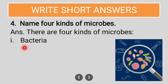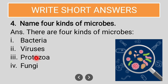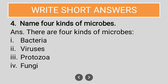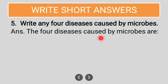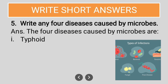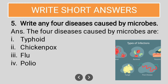Fourth short answer: name four kinds of microbes. There are four kinds of microbes: bacteria, viruses, protozoa, and fungi. Fifth question: write any four diseases caused by microbes — typhoid, chickenpox, flu, and polio.